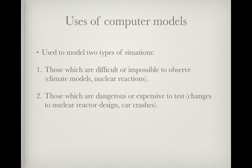Uses of computer models. They are used to model two types of situations: those which are difficult or impossible to observe, such as climate models, nuclear reactions, or things like the Big Bang, which can't actually be repeated and are just theoretical; and those which are dangerous or expensive to test, such as changes to nuclear reactor design, car crashes, or tests in environments which may be hostile towards human interaction, such as volcanoes and deserts.